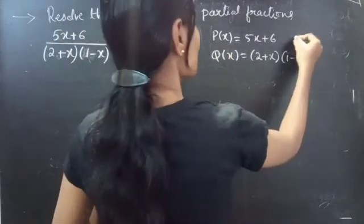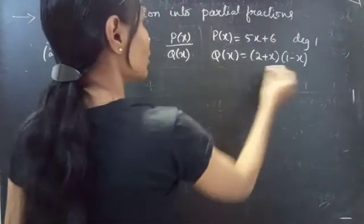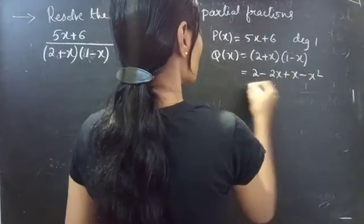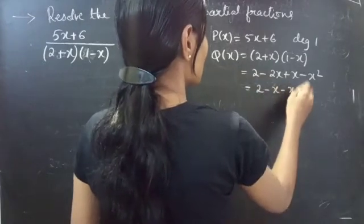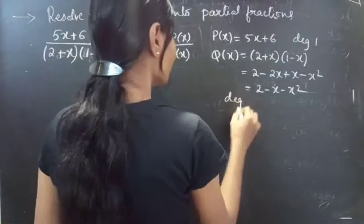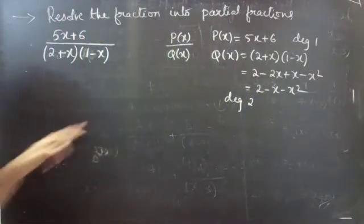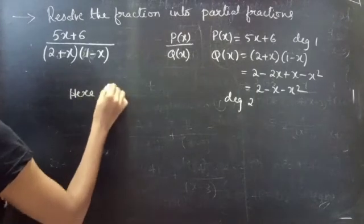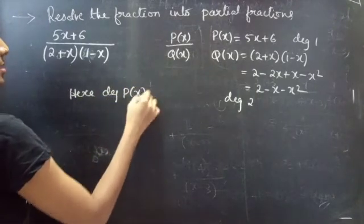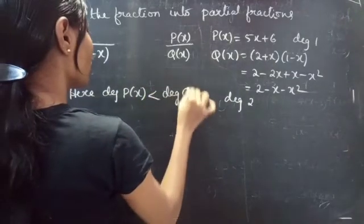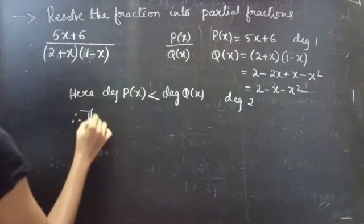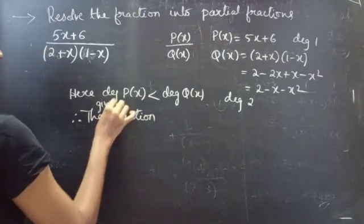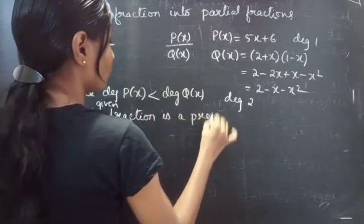The degree of P(x) is 1. For Q(x), expanding gives 2 minus 2x plus x minus x squared, which equals 2 minus x minus x squared. So the degree of Q(x) is 2. Since the degree of P(x) is less than the degree of Q(x), the given fraction is a proper fraction.